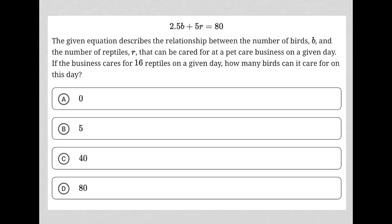So this question starts off by providing this equation here, 2.5b plus 5r equals 80.